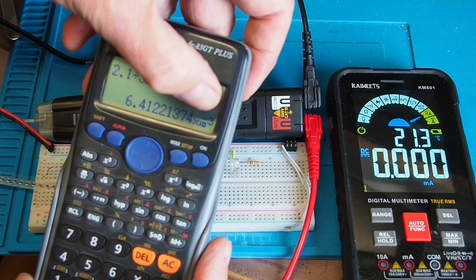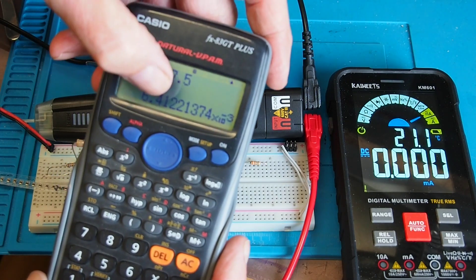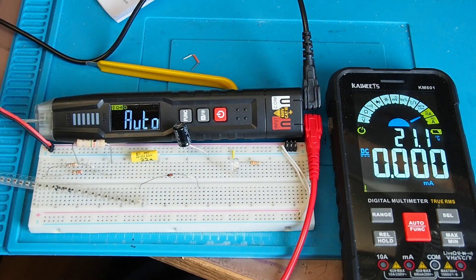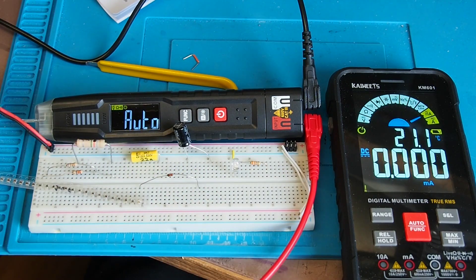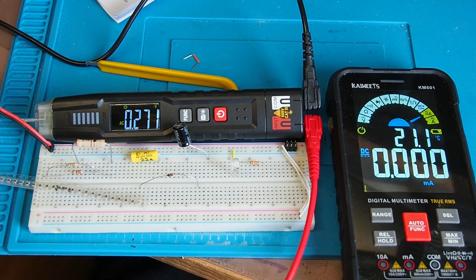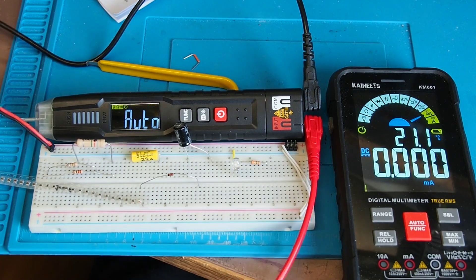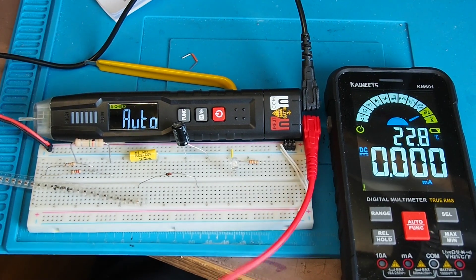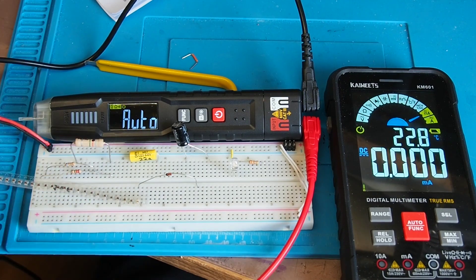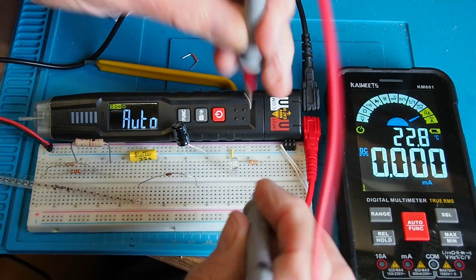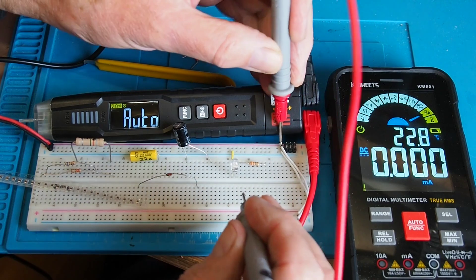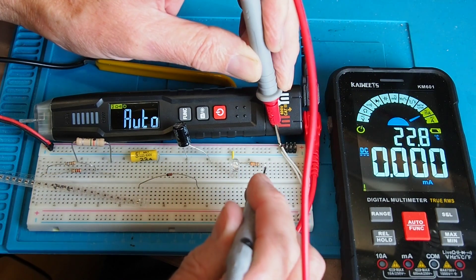In this case it's saying 6.4 times 10 to the minus 3, which is about 6.4 milliamps calculated current. Let's double check with another meter that will do current. Here we've got the Kaiweets KM601 set to current mode. Let's put that into circuit and get that LED to light and see what this display says.